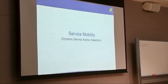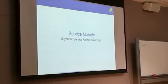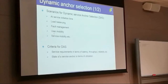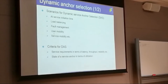Today I am going to talk about the service mobility scenario, in which we are currently doing dynamic service anchor selection — choosing which anchor to select once a service arrives. The dynamic selection of an anchor can happen at service initiation, at load balancing, in fault management, or during service mobility. The criteria for dynamic anchor selection are latency, throughput, and reliability, along with the current utilization state of the service anchors.